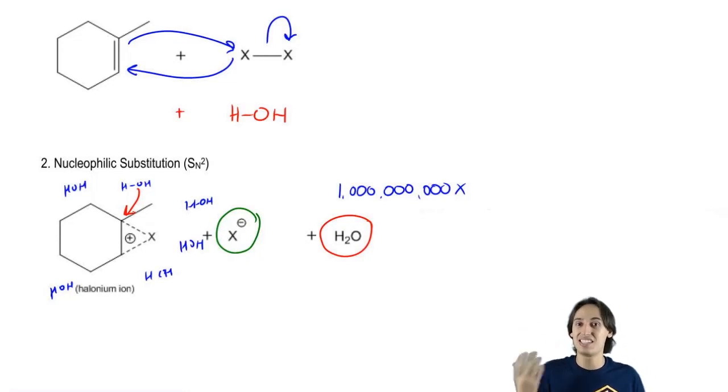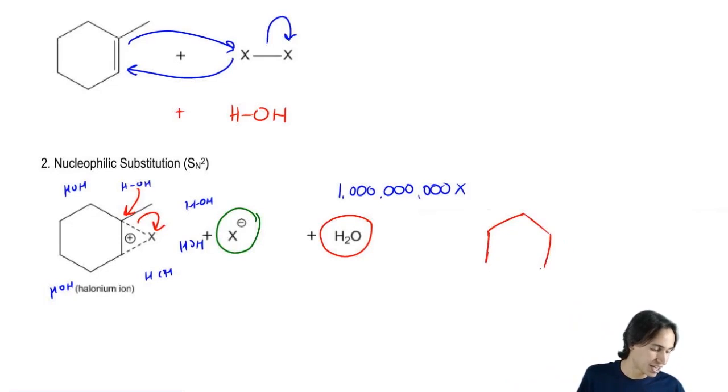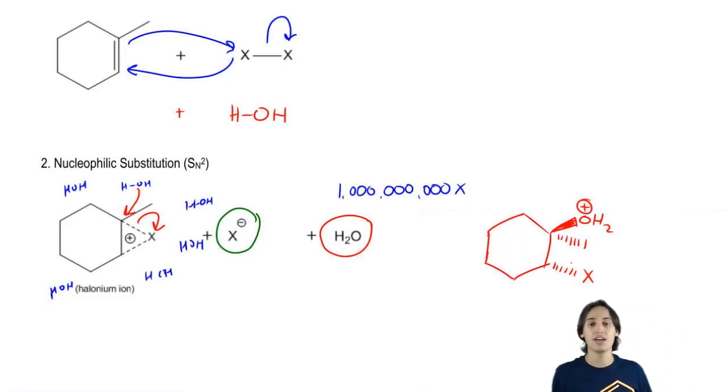And remember, the water has the electrons on it. So I go ahead and I make that bond, I break that bond. And what that's going to give me is a major product that is a halohydrin. So if my water adds to the front, then that means that my X is going to add to the back. And that means that if my water was in the front, then my methyl group would also be towards the back. Now is this my final product? No.